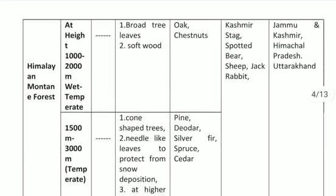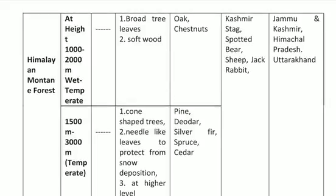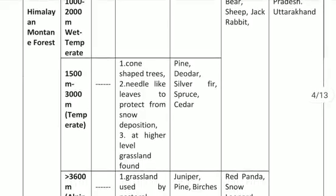Today we learn about Himalayan Mountain Forest. At a height of 1000 to 2000 meters, the temperature is moderate. Second characteristic is broad tree leaves — the leaves of its trees are very large. The wood is soft wood. Main trees include oak and chestnut. Animals found here are Kashmiri stag, snow leopard, bear, sheep, yak, and rabbit. These forests are found in Jammu & Kashmir, Himachal Pradesh, and Uttarakhand.